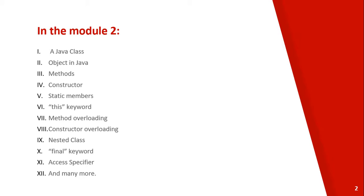We will see Java class in this module — Object, Method, Constructor, Static Members, This Keyword, Method Overloading, Constructor Overloading, Nested Class, Final Keyword, Access Specifier, and we will see a lot of things.